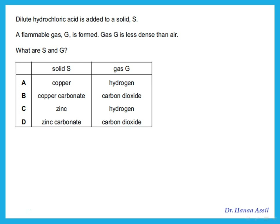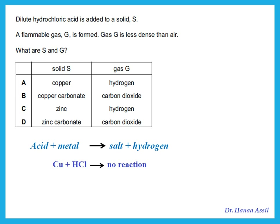Dilute hydrochloric acid is added to solid S, and a flammable gas less dense than air is formed. The gas must be hydrogen, since hydrogen is a flammable gas less dense than air. To get hydrogen gas, the acid must react with a metal. The two metal choices are copper and zinc. Copper does not react with acid, so it must be zinc. Zinc reacts with hydrochloric acid to give hydrogen gas — that is the answer.